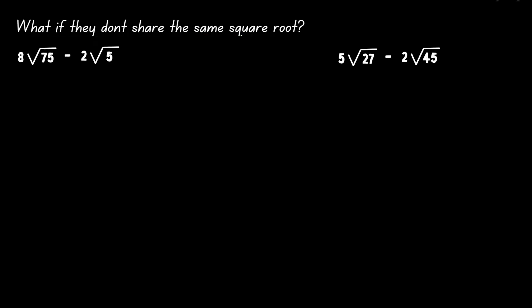Which is the example on the left — we have that scenario. Notice that within the first term, the value inside the square root is 75, and in the second term, the value inside the square root is 5. So if they don't have the same value inside the square root, does that mean we cannot combine them at all? Before we make that conclusion, let's see if we can simplify some of those square roots.